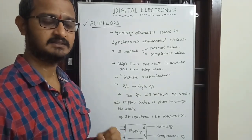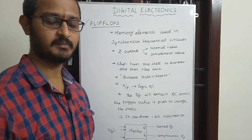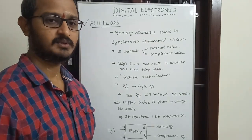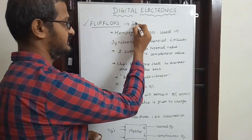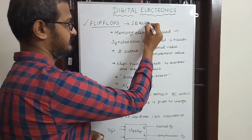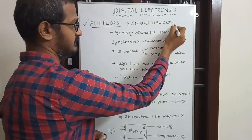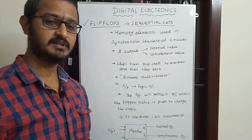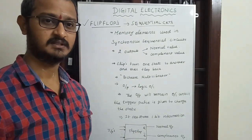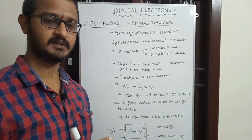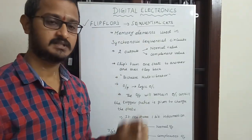So the adders, subtractors, encoders, decoders, multiplexers, and demultiplexers — all of these are combinational circuits. Now we have flip-flops, which are sequential circuits. Sequential circuits depend upon the present input and past output. We have to store the output and then process it — that is the sequential circuit.